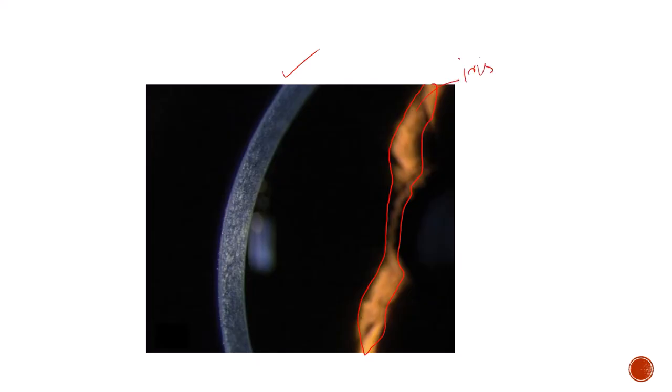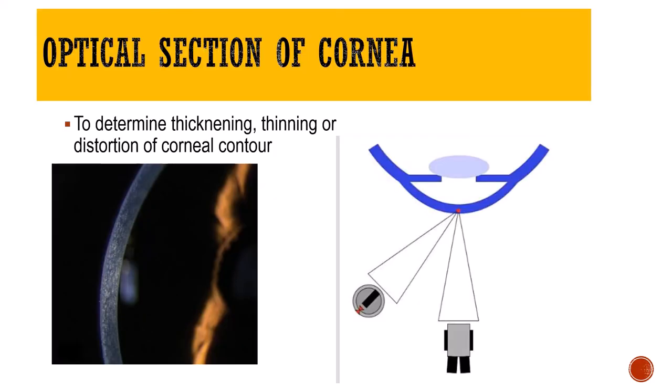In an optical section you will see two beams: the first is a nice focused beam coming from the cornea, and the second is an irregular, less well-focused beam coming from the iris. Between the cornea and iris is the anterior chamber, which is an optically clear medium that does not reflect light, so the anterior chamber appears totally black. The optical section can be of the cornea, the lens, or the vitreous, depending on where exactly you focus the light.